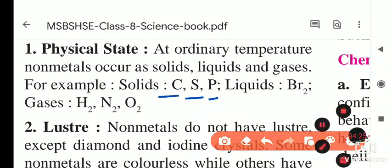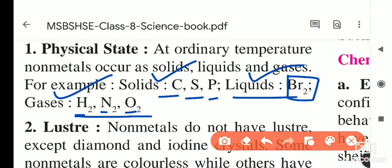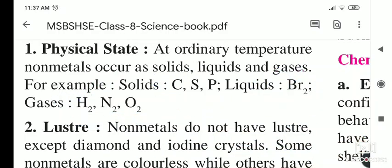Bromine is a non-metal which is in liquid state at normal temperature. Some non-metals exist as gases at normal temperature, such as hydrogen (H₂), nitrogen (N₂), and oxygen (O₂). So non-metals can occur in solid, liquid, and gaseous states.